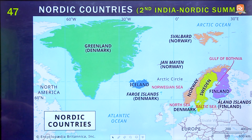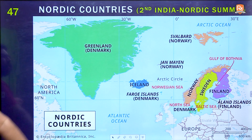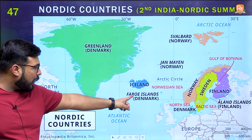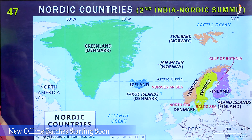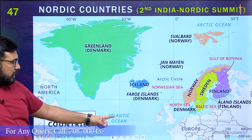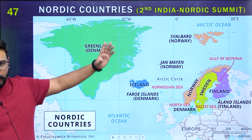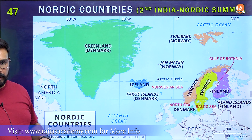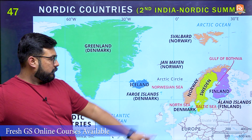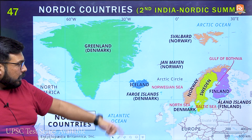Coming to the Nordic countries — important due to the India-Nordic Summit. These countries form the Nordic group. Important island groups include the Faroe Islands, found at the intersection of the Norwegian Sea, North Sea, and Atlantic Ocean. The second is the Åland Islands, found at the intersection of the Gulf of Bothnia and the Baltic Sea. Another important island in the Baltic Sea is Gotland, which will be covered separately.